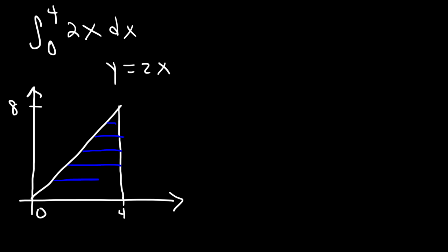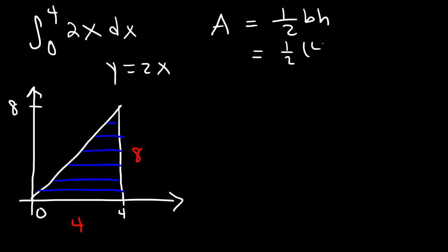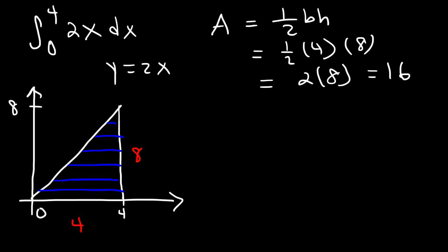Basically we need to determine the area of a right triangle. We have a base of 4 and a height of 8. The area of a right triangle is one half base times height. So the base is 4, the height is 8. Half of 4 is 2, and 2 times 8 is 16. So the area of the shaded region is 16 square units.